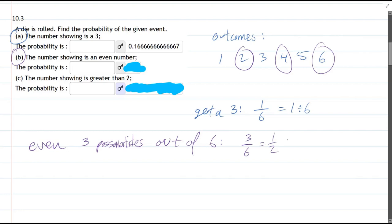which reduces to one-half. And if you do one divided by two, that's an easy division to do. You get 0.5. And that'll be part B.